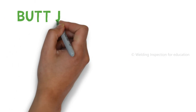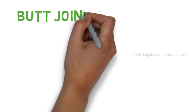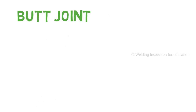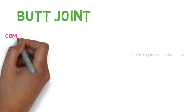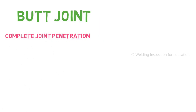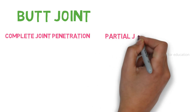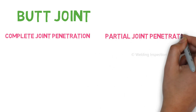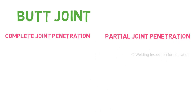Groove weld is the type of weld, and to define the type of weld, the connection between those metals is considered as a butt joint. Now there are two types of butt joint: complete joint penetration and partial joint penetration.